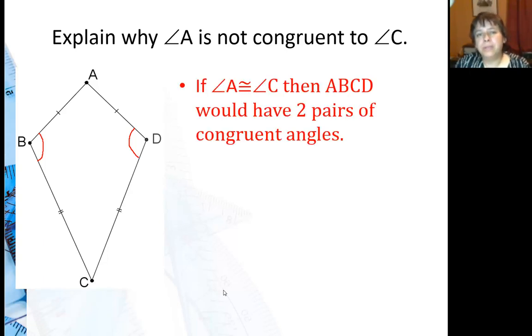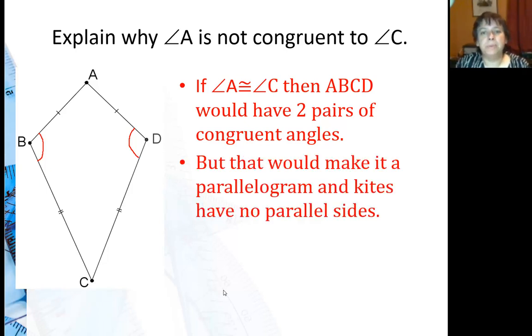Well, if angle A were congruent to angle C, then I would have two pairs of congruent angles. Both the sets of opposite angles would be congruent. But that would make it a parallelogram, and kites have no parallel sides. Therefore, angle A is not congruent to angle C.